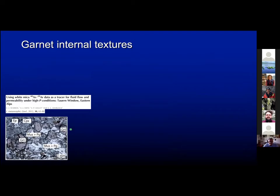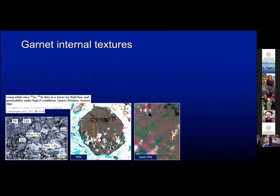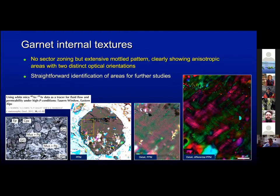We found the same patterns also in an eclogite from the Tauern Window that Claire kindly provided. You do not find sector zoning in these garnets, but with PPM and differential PPM, you can see an extensive mottled pattern that clearly shows that the garnet is anisotropic, with two distinct orientations in the different zones of garnet.